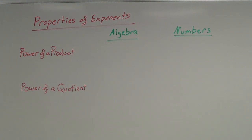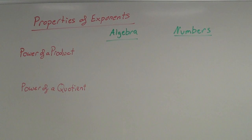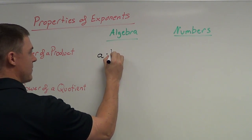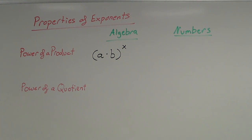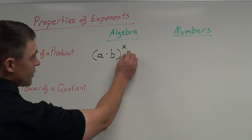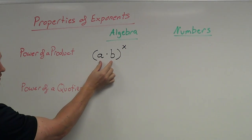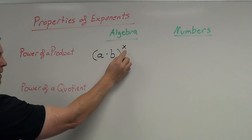Notice that we have product and quotient, so we're going to deal with multiplication and division for these two separate properties. Power of a product — let me write down an example first and then explain it. So if I have a times b to some power, we'll call it x, what we're doing is taking the power of a product. This power x is being applied to a product — a times b. That's where we get this name: power of a product.